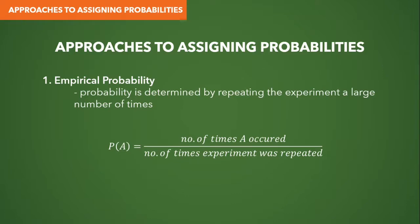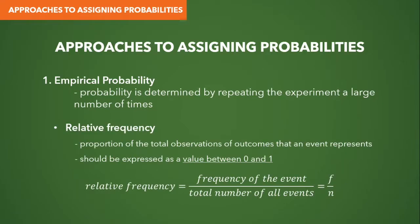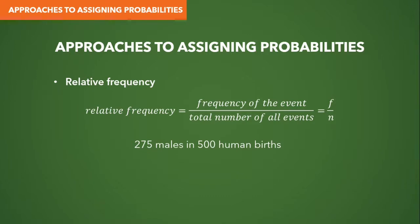We have two approaches to probability used most extensively in biostatistics: empirical probability and classical probability. In empirical probability, the probability is determined by repeating the experiment a large number of times, calculated using the formula: P(A) equals the total number of times A occurred divided by the number of times the experiment was repeated. We call this empirical because we determine the probability after the event has occurred. The most common concept in empirical probability is relative frequency — the proportion of total observations that an event represents, expressed as a value between 0 and 1. For example, in a particular hospital with 275 males in every 500 human births, the relative frequency is 275 divided by 500, which equals 0.55 or 55%.